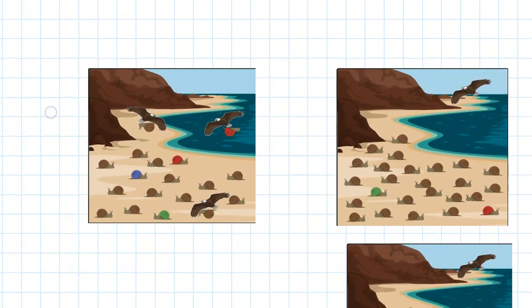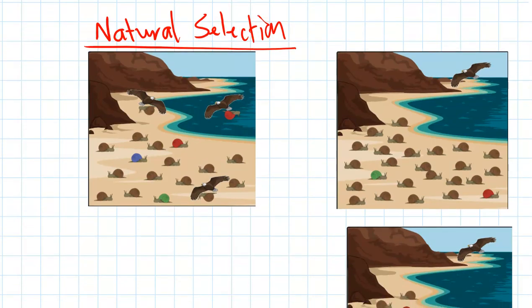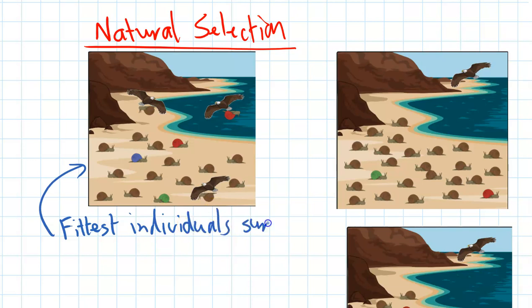Let's quickly recap natural selection. Remember, this is the process where in a population some traits will be more beneficial, so they'll help an individual to survive more. That means the fittest individuals will tend to survive and have more offspring than the less fit individuals. So the beneficial traits are going to increase over time in the population.